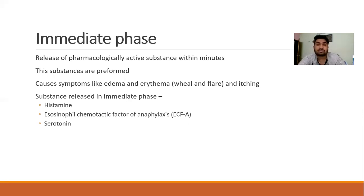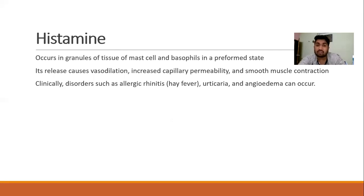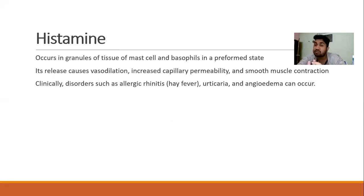Histamine is normally present in the granules of mast cells and basophils, and it is preformed. It causes vasodilation, capillary permeability, and smooth muscle contraction. Due to histamine, disorders like allergic rhinitis, urticaria, and angioedema can occur. Remember: in bronchial asthma, histamine does not play a role. So antihistamines are not suitable for bronchial asthma.